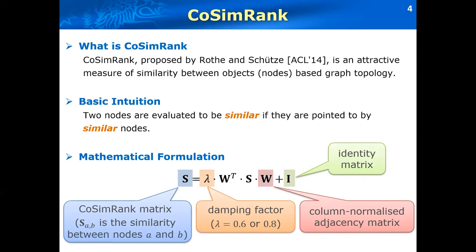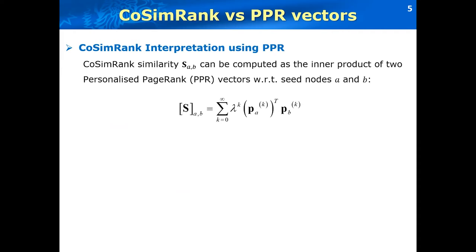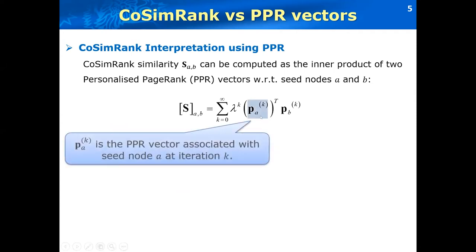Existing work on COSIM rank search interpreted the similarity score as the inner product of two personalized page rank vectors with respect to the seed node A and B respectively. Here, PA at K denotes the personalized page rank vector associated with the seed node A at iteration K, which can be iteratively computed as follows. And initially, the page rank vector is set as the unit vector whose A's entry is 1 and 0 elsewhere.